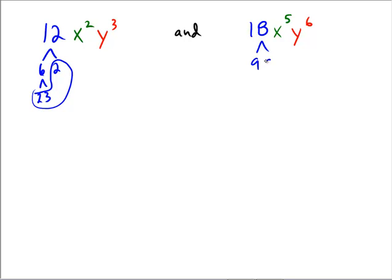18 would break into a 9 and a 2, and 9 is 3 times 3, so it's a 3, and a 3, and a 2.